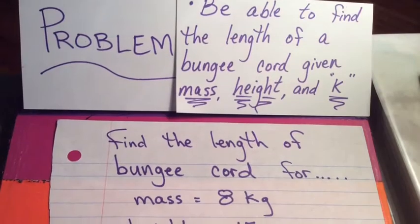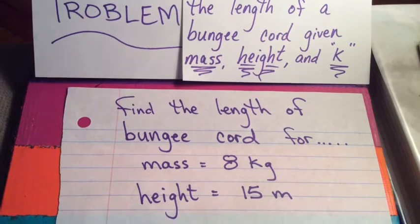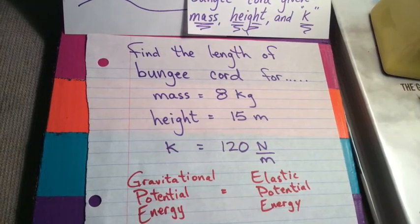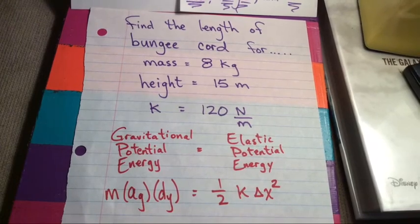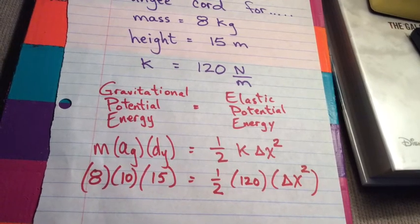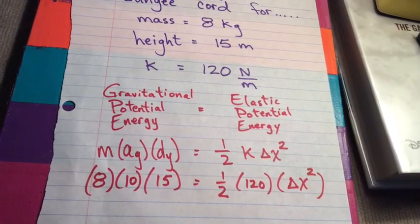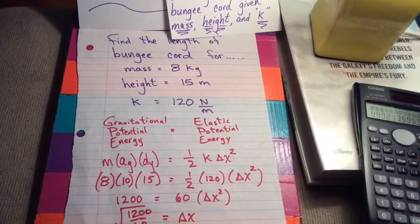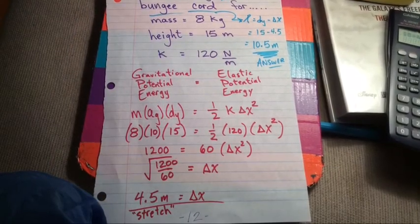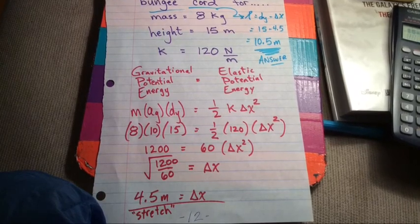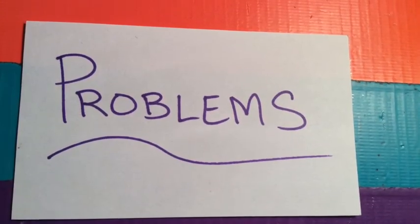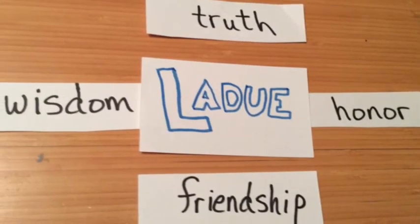Bungee cord. Mass, height, and K. This is kind of our classic conservation of energy problem, is what this is. So 8 kilograms. It's like a rock. Height, 15 meters. That's like a roof at school. And then a K, about 120. That's fair. That's what a lot of our bungee cords were. So it's the classic. Set your two types of energy equal to each other. Joules equals joules. Mass times acceleration due to gravity times height is going to equal one-half K delta X. Delta X is our stretch. Delta X squared. Don't forget to take the square root after you solve, or as you're solving. So yeah, you've got your stretch of about 4.5 meters, which would mean your bungee cord should be about 10.5. Thanks for watching.